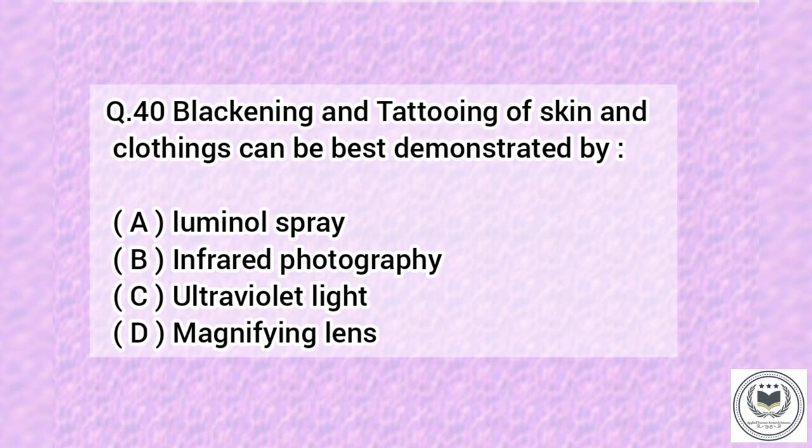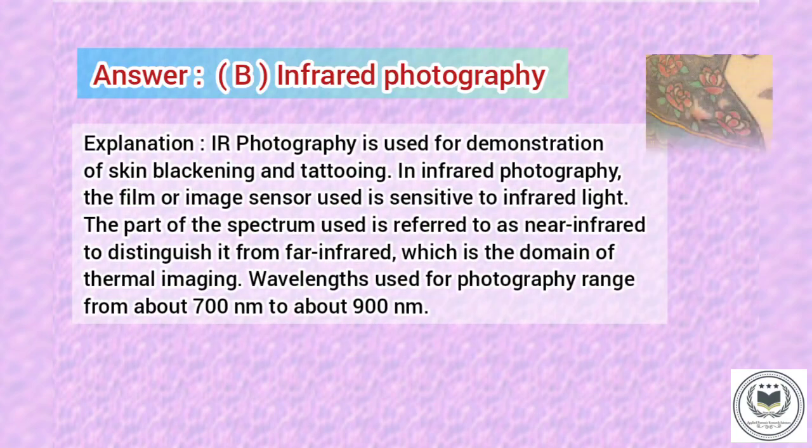Question 40. Blackening and tattooing of skin and clothings can be best demonstrated by: Option A: Luminol spray. Option B: Infrared photography. Option C: Ultraviolet light. Option D: Magnifying glass. Answer is Option B, Infrared photography.